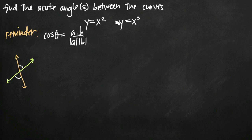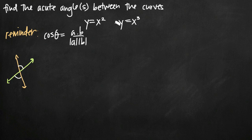The first thing we need to do is find the points of intersection of these two curves — we need to figure out where they intersect one another. Then we need to find tangent lines to these curves at any points of intersection. Then we've really simplified it to finding the angle between lines. So let's get right to it. Because both curves are equal to y, we can set the right-hand sides equal to one another and say x squared is equal to x cubed.